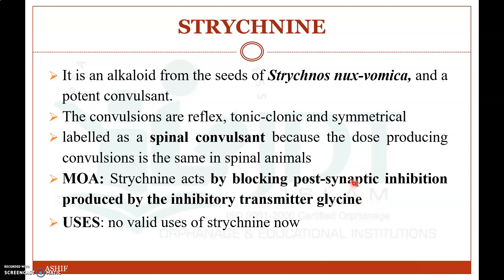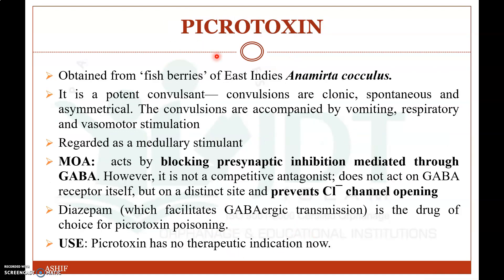The dose producing convulsions is the same across all animals that have a spinal cord. The mechanism of action is that strychnine acts by blocking post-synaptic inhibition produced by the inhibitory neurotransmitter glycine. The two major inhibitory neurotransmitters in the brain are GABA and glycine. There is no valid therapeutic use of strychnine today because it produces convulsions.